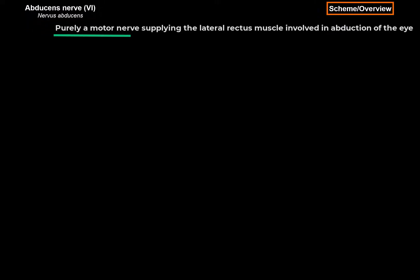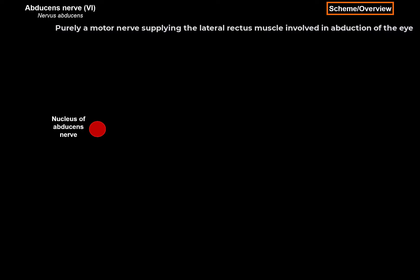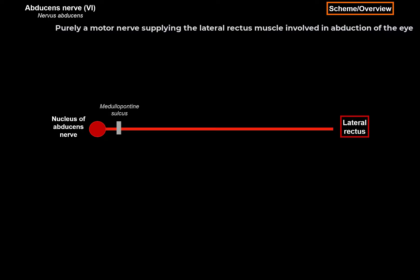The abducent nerve is a purely motor nerve supplying the lateral rectus muscle, involved in abduction of the eye. Here's the scheme: the nucleus of the abducent nerve is in the pons, and the nerve will travel through the medullopontine sulcus — the junction between the medulla and pons — then pierce the dura mater, travel through the cavernous sinus, go through the superior orbital fissure, and then through the common tendinous ring, where it innervates the lateral rectus muscle.